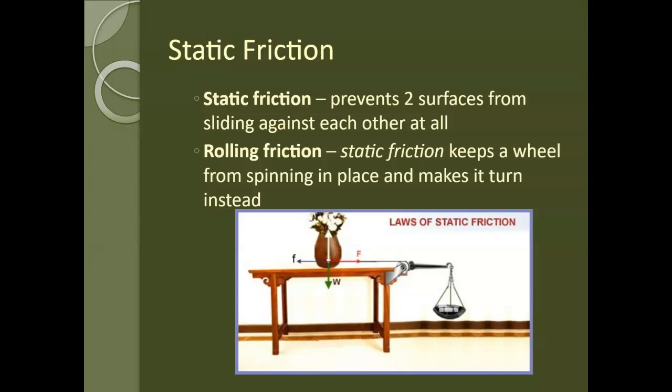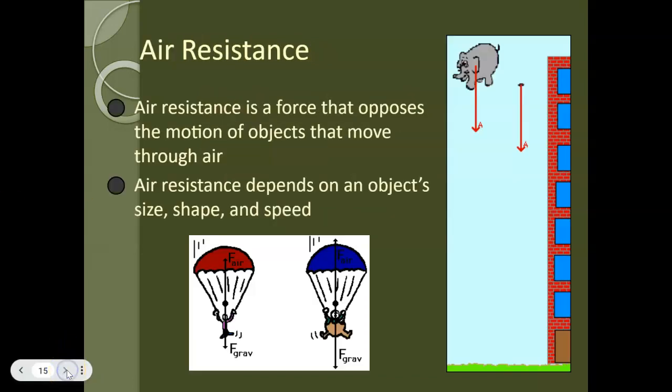And then rolling friction keeps a wheel from spinning in place and makes it turn instead. So without rolling friction, if you think about the tires on a car, if we didn't have rolling friction instead of your car moving forward and rolling forward, being able to grip the ground and move, your car wheels would just spin in place and you'd never go anywhere. So rolling friction is related to car tires.